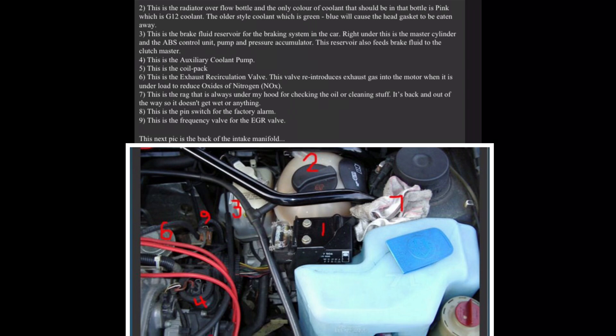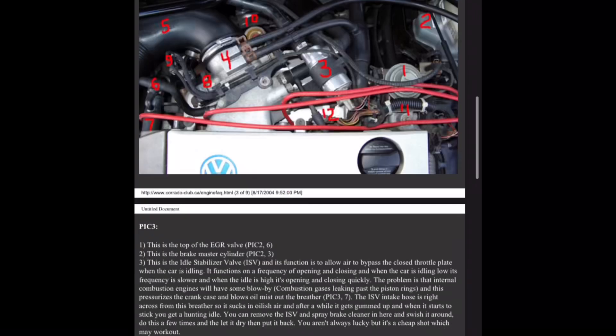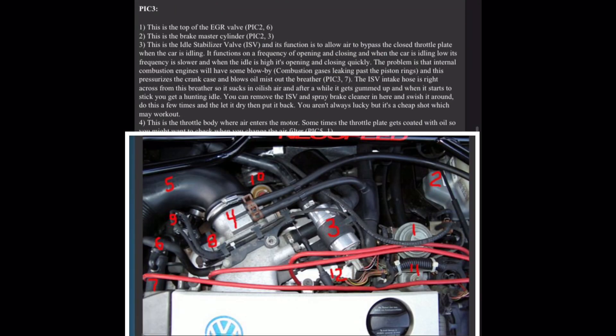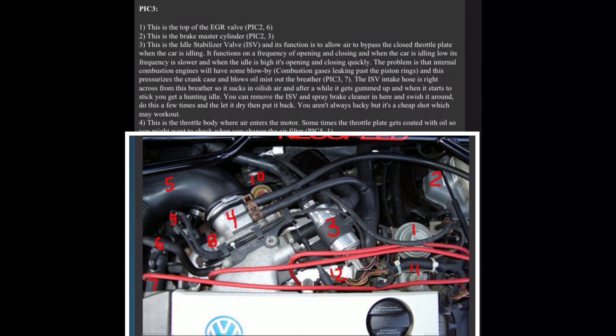Nine, this is the frequency valve for the EGR valve. This next pick is the back of the intake manifold, pick three. One, this is the top of the EGR valve, pick two, six. Two, this is the brake master cylinder, pick two, three. Three, this is the idle stabilizer valve, ISV, and its function is to allow air to bypass the closed throttle plate when the car is idling.